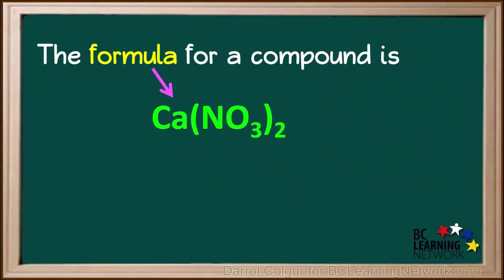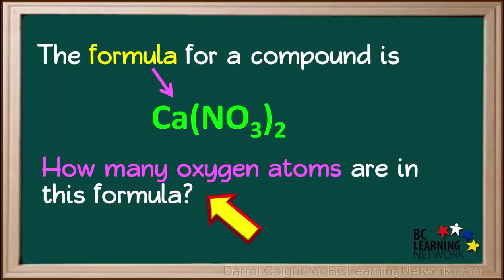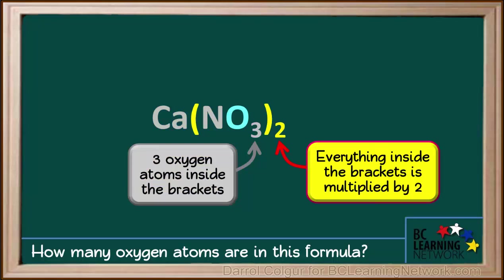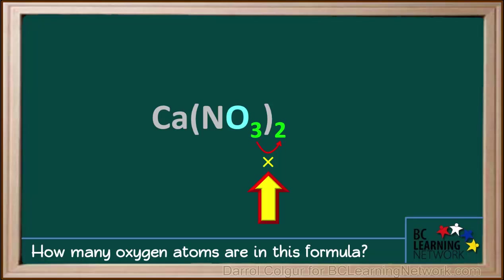Here is the formula for a compound that contains brackets. We're asked to count the number of oxygen atoms in this formula. This three to the bottom right of the O means there are three oxygen atoms inside the brackets. This two to the bottom right of the brackets means that subscripts inside the bracket must be multiplied by two in order to get the number of atoms of an element. To find the number of oxygen atoms, we go three times two equals six.